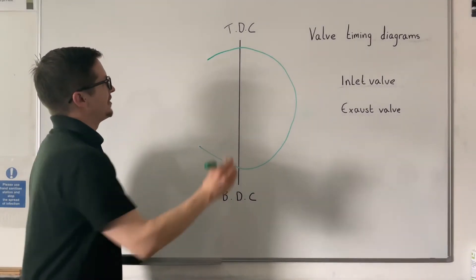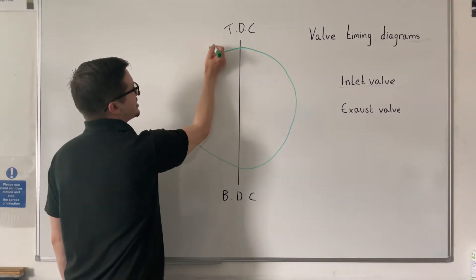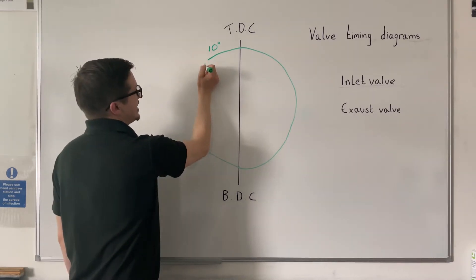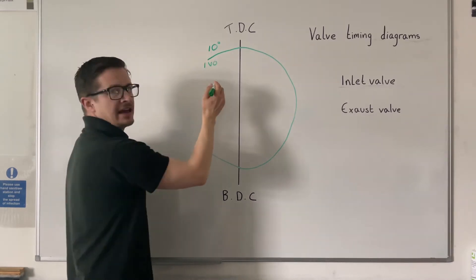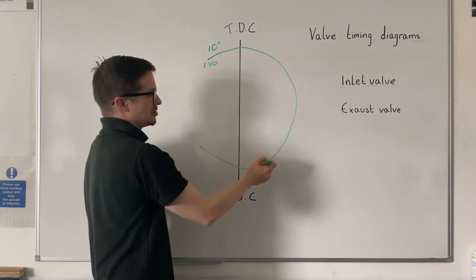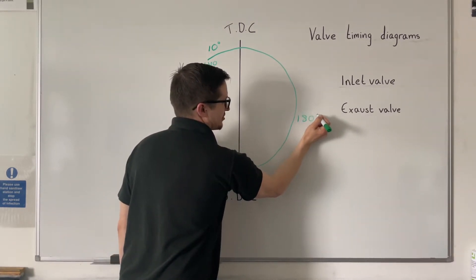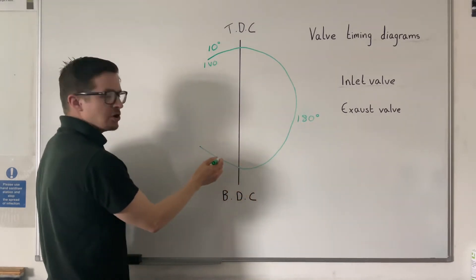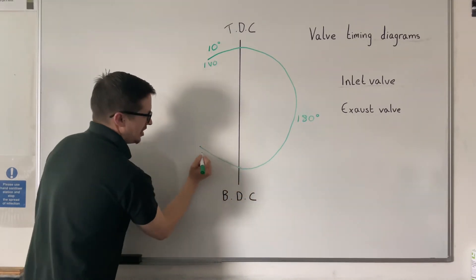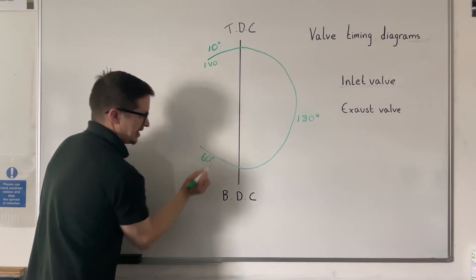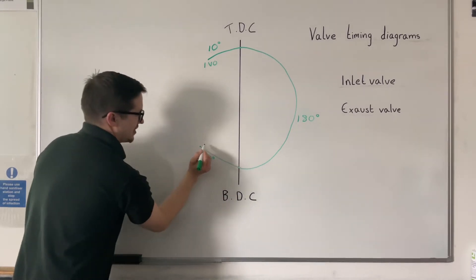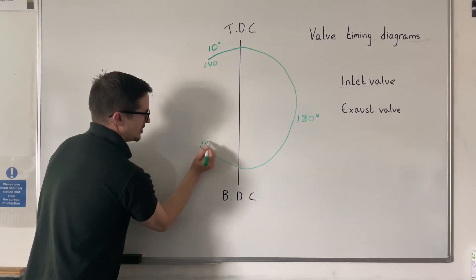The inlet valve opens around 10 degrees before top dead centre. It is open for the whole of the induction stroke, that is 180 degrees, and it actually closes on the compression stroke at around 60 degrees after bottom dead centre.